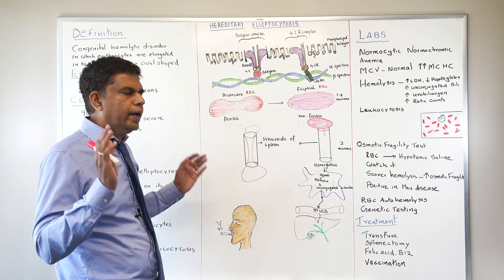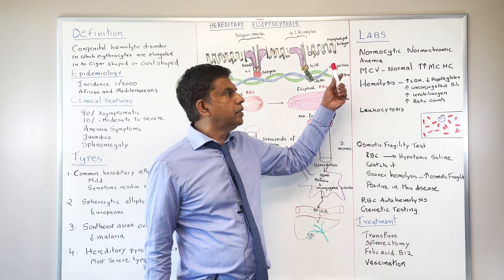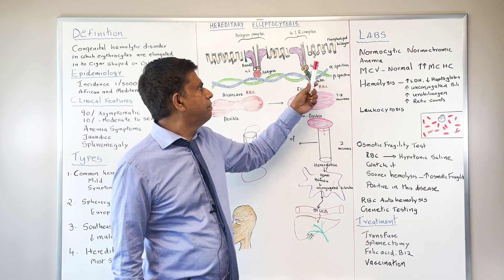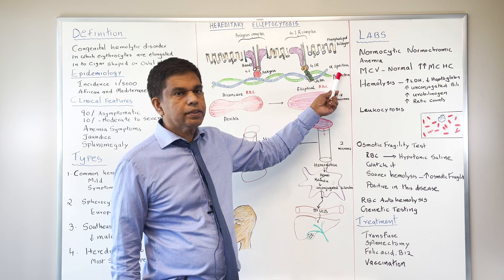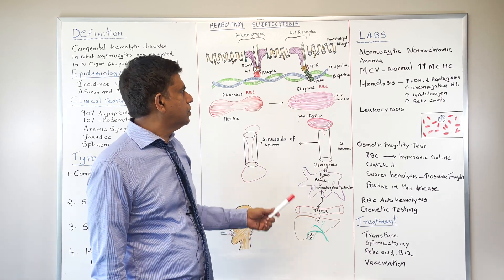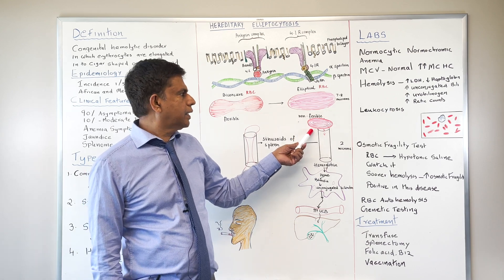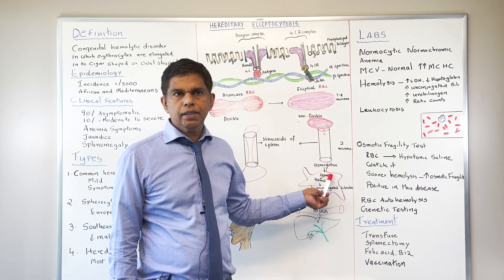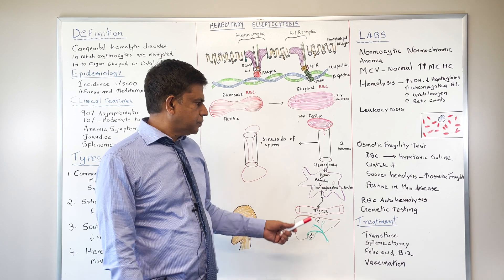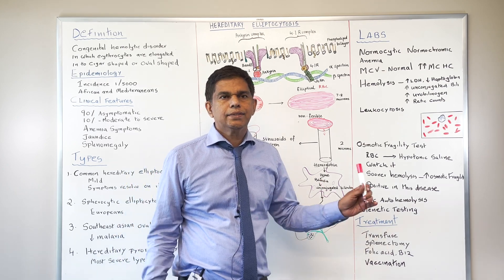What is the pathophysiology in elliptocytosis? Mutations occur in protein 4.1 — a membrane-associated protein — and in spectrin, the cytoskeleton protein. With all of these mutated, the shape becomes elliptical. When they're elliptical, they can't squeeze through the sinusoids, leading to hemolysis. You then get jaundice with unconjugated bilirubin — the full hemolysis picture.